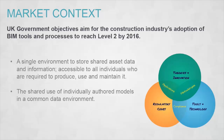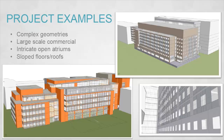By definition, achieving Level 2 means to create a single environment which stores shared asset data and information accessible to all individuals who are required to produce, use, and maintain it. This bi-directional objective was tested with two similar energy modeling projects consisting of 8 stories each and about 1,500 spaces. This meant that manual data exchange would be extremely cumbersome to a point that the effort would exceed the value. Fortunately, we managed to make this idea work, and the lessons we learned were beyond my expectations.